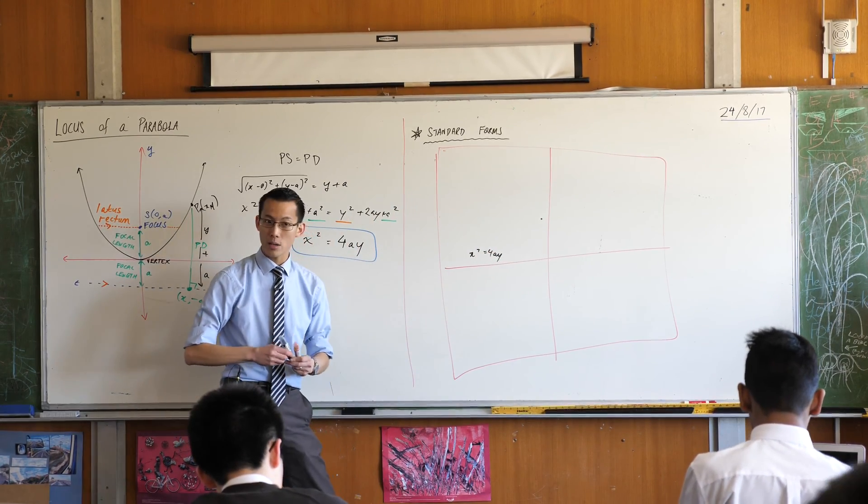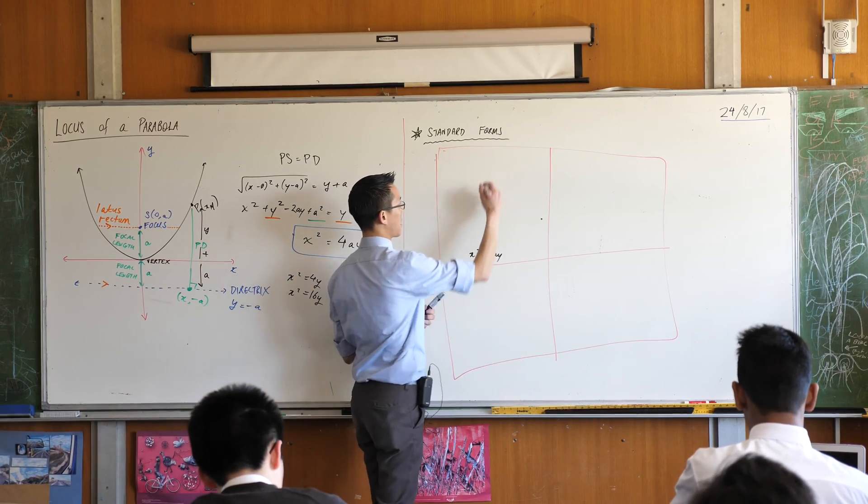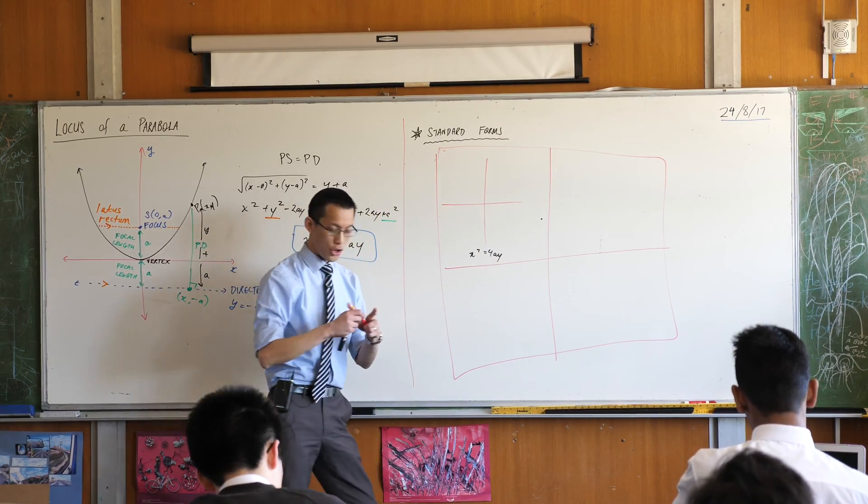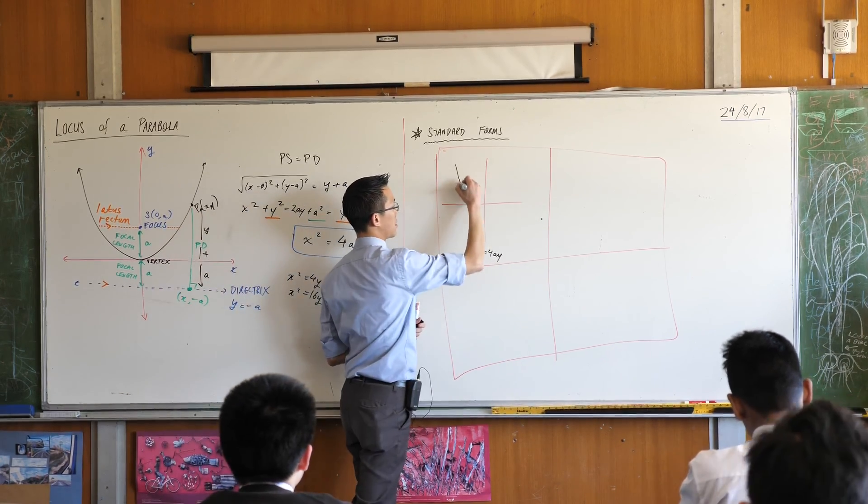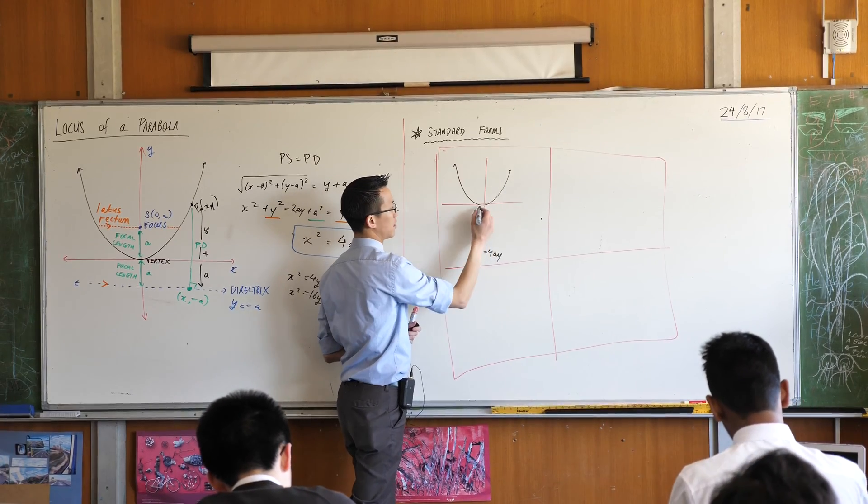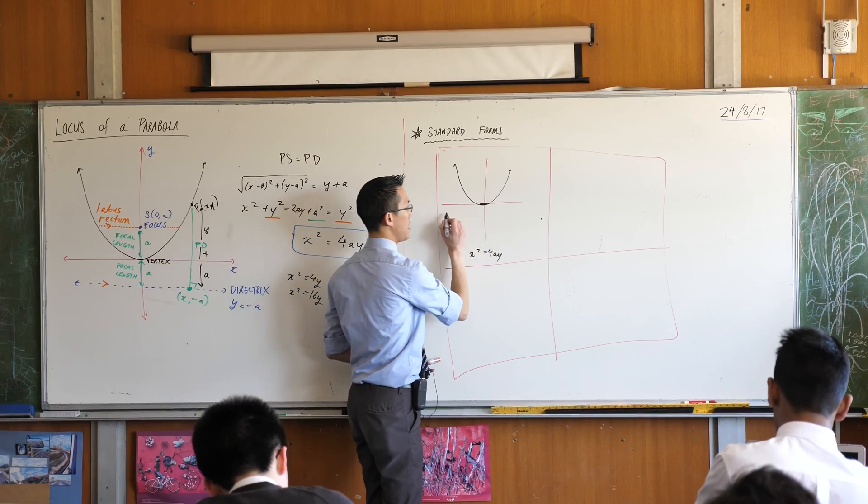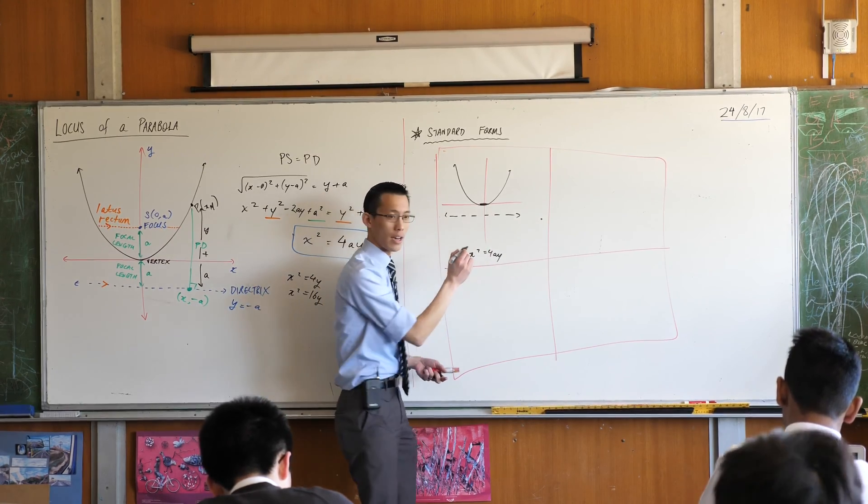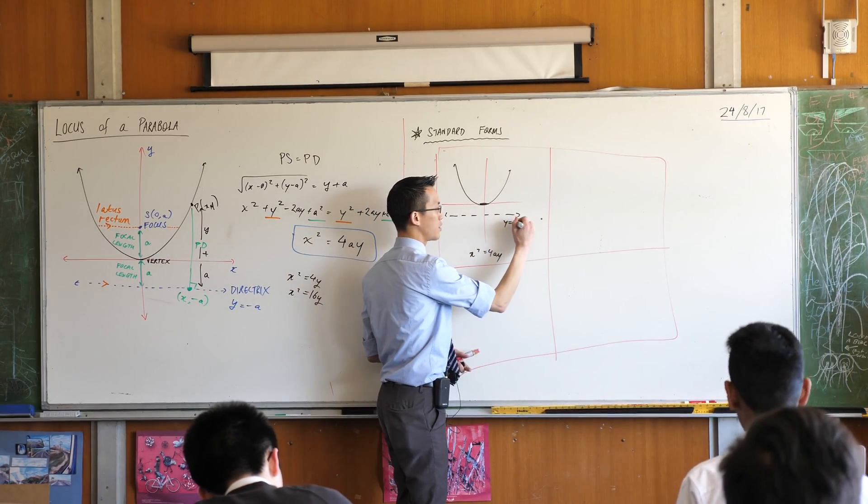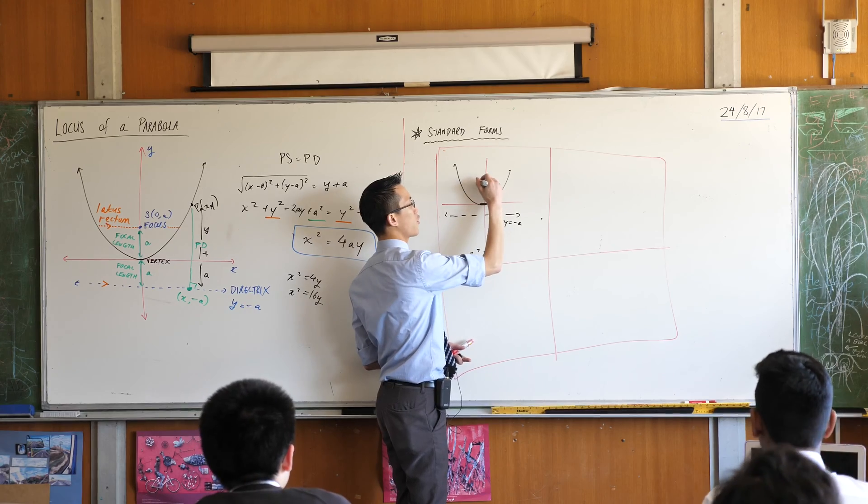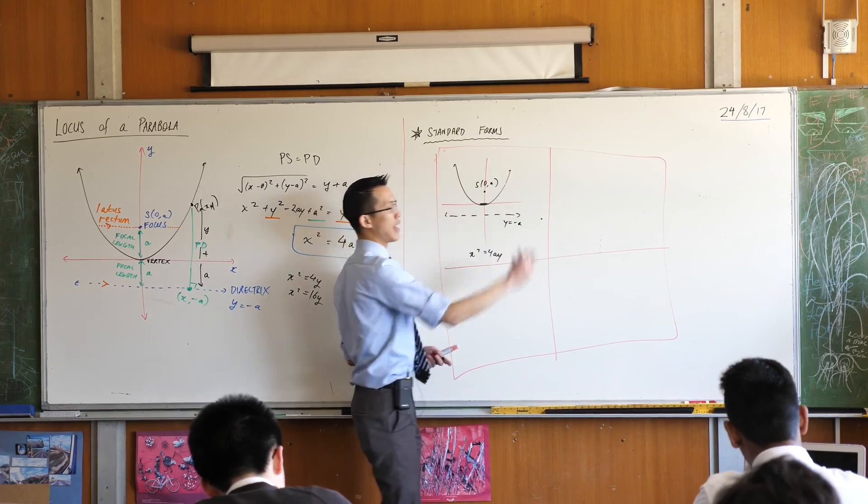So if you see x squared equals 4ay, you can draw your set of axes. You know this guy is going to have its vertex there at the origin. It's gonna have its directrix down here at y equals negative a and its focus up here at zero comma a.